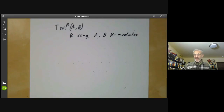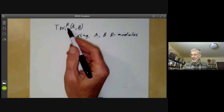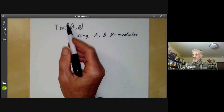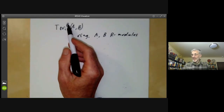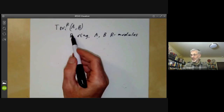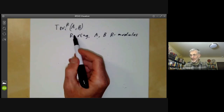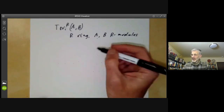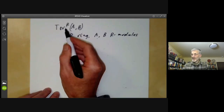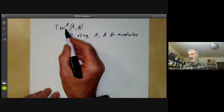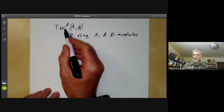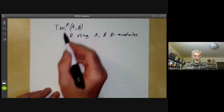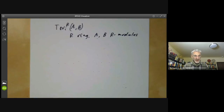In the first couple of lectures, we calculated this group when R was the ring of integers. In the case of integers, these are non-zero only for i equals zero or one, and you generally omit the subscript i.